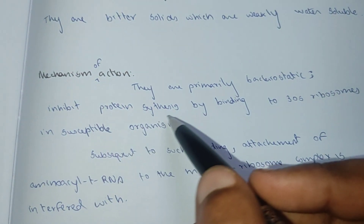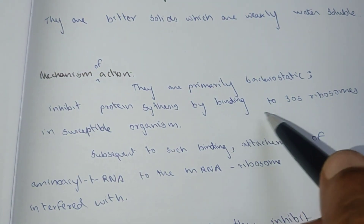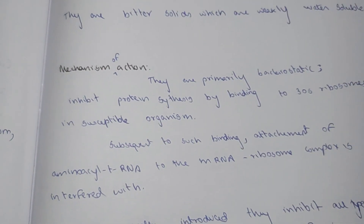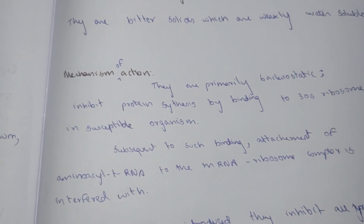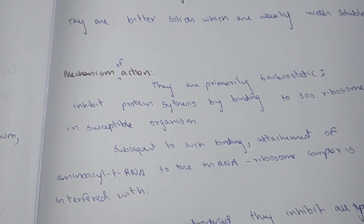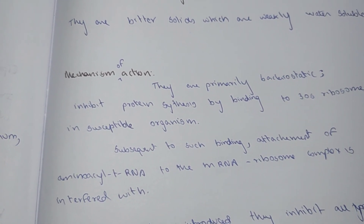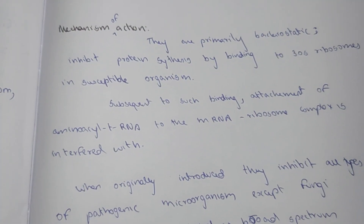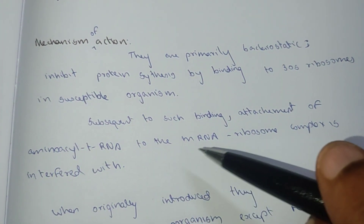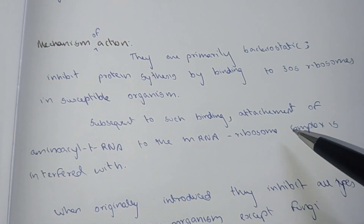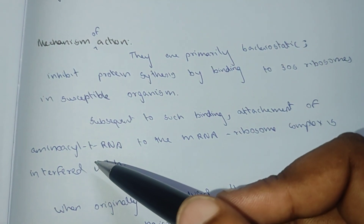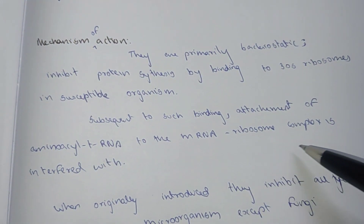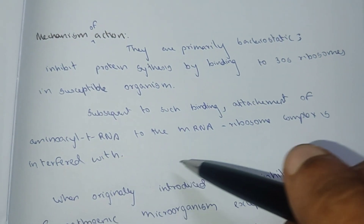Bacteriostatic activity: it inhibits protein synthesis by binding to the 30S ribosome in susceptible organisms. Subsequent to such binding, attachment of aminoacyl tRNA to the mRNA ribosome complex is interfered with.